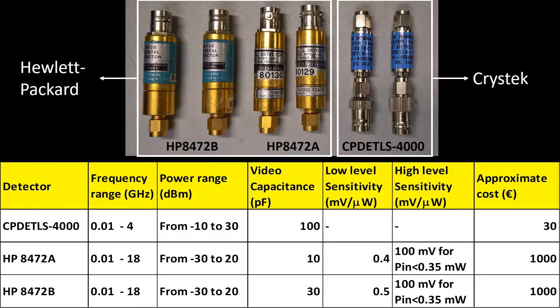Hewlett Packard devices are quite old. They are in our labs since more than 20 years. But either these or other models very similar to these ones are still commercially available. They are specified to detect power from minus 30 dBm, this is one microwatt, to 20 dBm at frequencies up to 18 GHz. They are significantly more expensive than Crystek detectors.